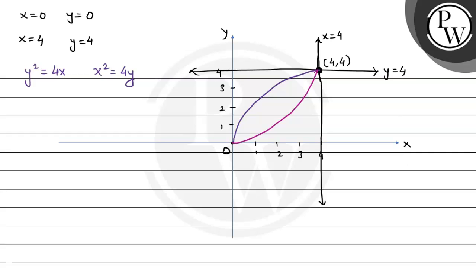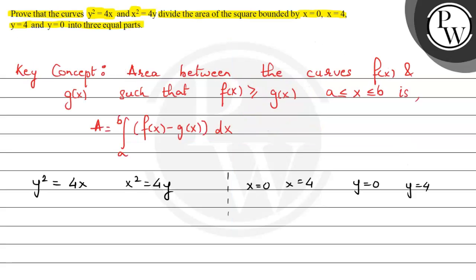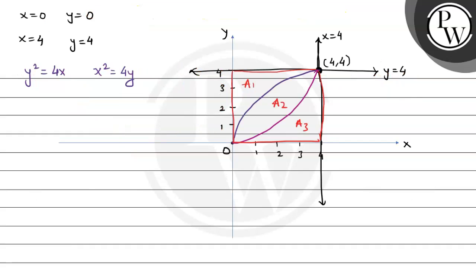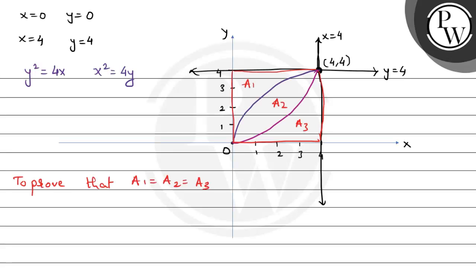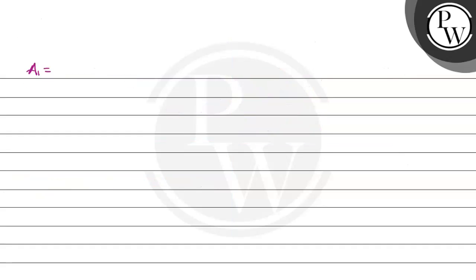As we can observe, this is a big square of length 4 units each. This square is cut into 3 portions. Let's call this portion A1, this is A2, and this is A3. We have to prove that these regions are of equal area, so we need to prove that A1 equals A2 equals A3. Let's first get the value for A1. This curve has equation y equals 2 times square root of x, and A1 is the region between the curves y equals 4 and y equals 2 times square root of x over the interval 0 to 4.